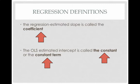Some definitions. The regression estimated slope is called the coefficient. The OLS estimated intercept is called the constant, or the constant term.